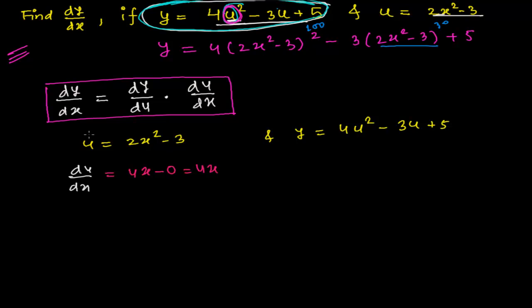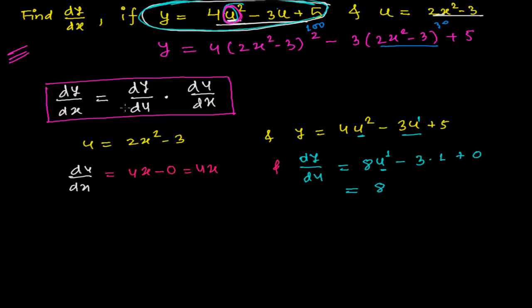Now let's find dy/du. Derivative of 4u squared with respect to u is 8u; derivative of -3u is -3; derivative of constant 5 is 0. So dy/du equals 8u minus 3. Substituting u = 2x squared minus 3, we get dy/du equals 8(2x squared minus 3) minus 3.